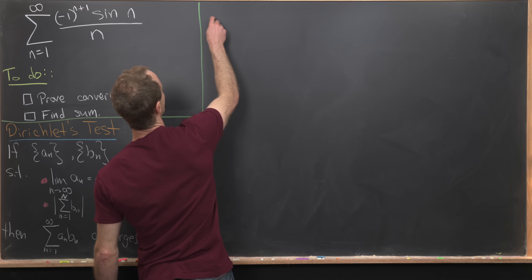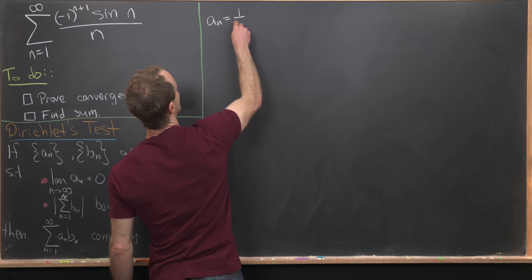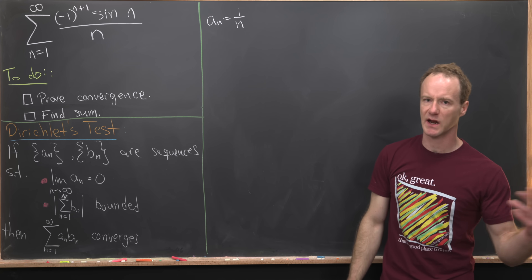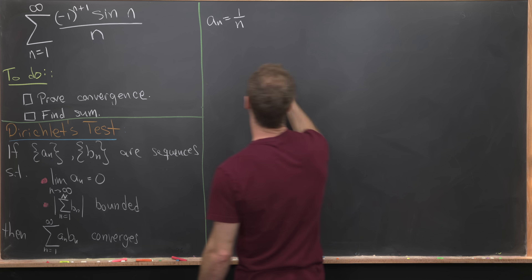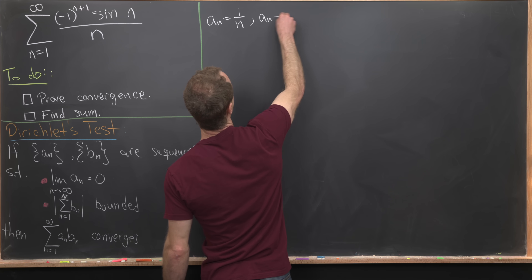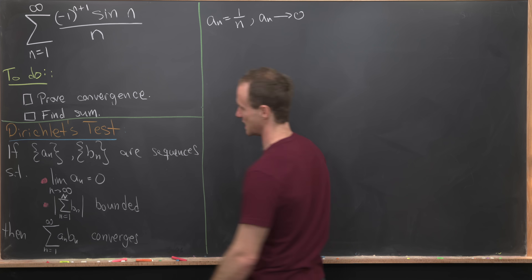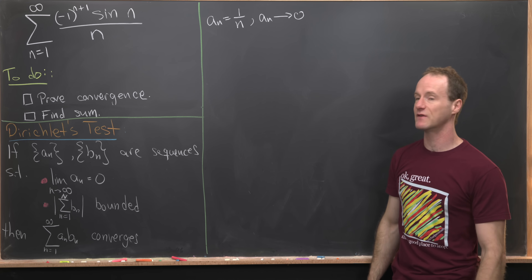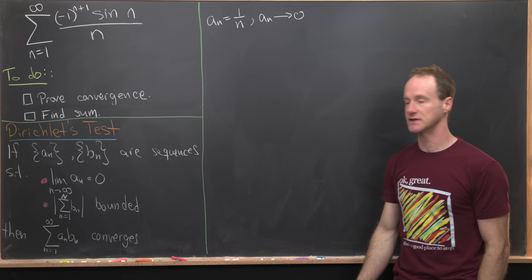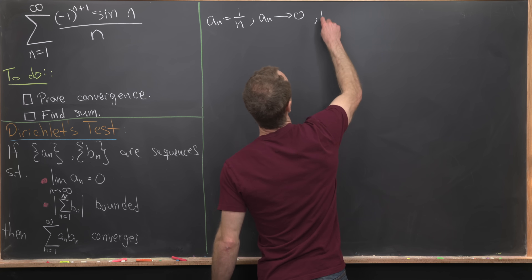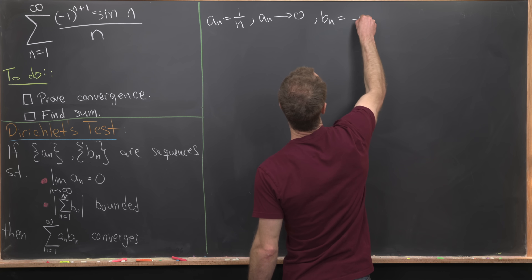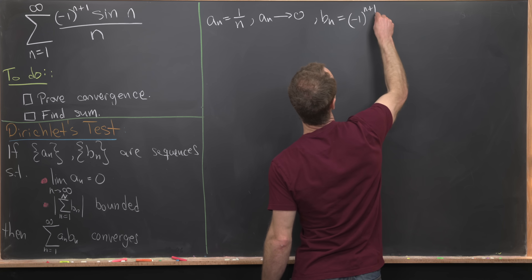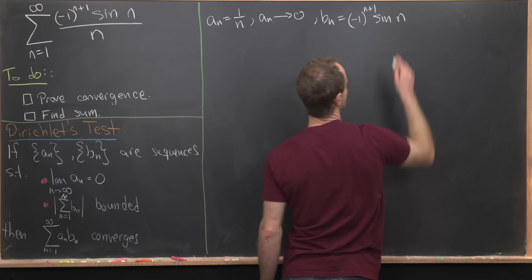We've got to put our problem in terms of these parts for Dirichlet's test. For our setup, we'll let a_n equal the 1 over n portion — that's the harmonic portion of the sequence. Very clearly, a_n approaches 0 as n goes to infinity. This is the limit of the sequence, not the limit of the series. That means b_n will be equal to the rest: minus 1 to the n plus 1 times sine of n.